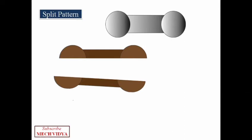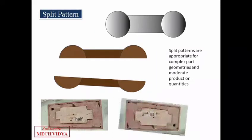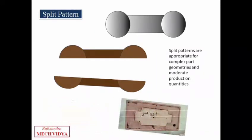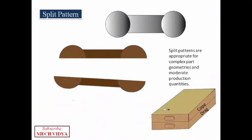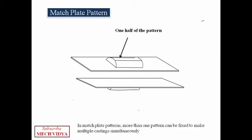Called the drag. And finally, when we join these two boxes we get the full shape of the pattern as we saw earlier. Then comes the match plate patterns. This plate contains one half of pattern in the cope while the other part is kept in the drag. These plates are usually made of aluminum or steel.